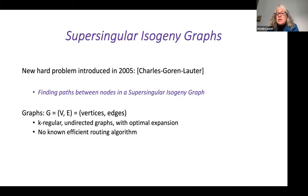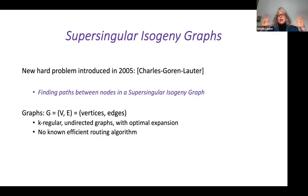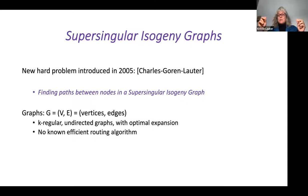So what are supersingular isogeny graphs and why are they relevant to cryptography? The new hard problem we introduced into cryptography in 2005 was the hardness of finding paths between nodes in these graphs. Imagine a gigantic cryptographic-size graph with two random vertices — the hard problem is finding a path between those two vertices. It's a really easy problem to state, but it's a lot more difficult to actually describe the graph.